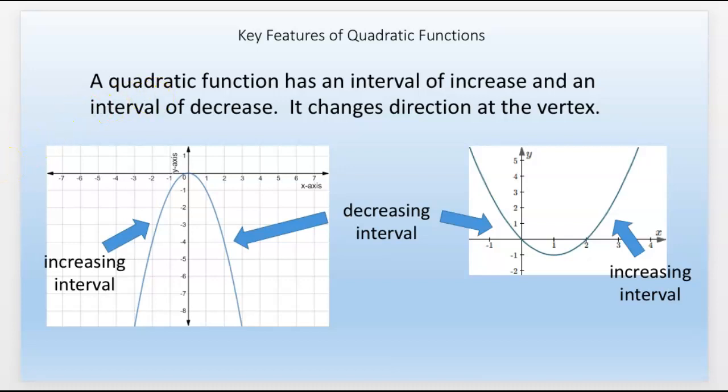A quadratic function has an interval of increase and an interval of decrease. It changes direction at the vertex. If it's upside down, it is increasing on the side. As x gets big, this is going up. But here, as x gets big, now it's coming down. The y values are actually decreasing here as x gets big. When the u is right side up like this, as x gets bigger, it's coming down. This is the decreasing interval until it hits 1. Then it starts to increase.